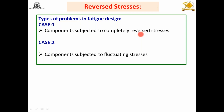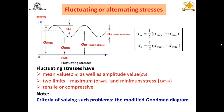The second case is when components are subjected to fluctuating load, meaning the load does not remain constant. Within one cycle you find variation — tensile stress may be 60 newton and compressive stress may be 30 newton during one cycle. We have already seen different sinusoidal models in earlier sessions. Now we are looking at how to design a component when subjected to fluctuating or alternating stresses.